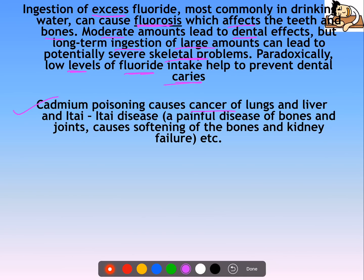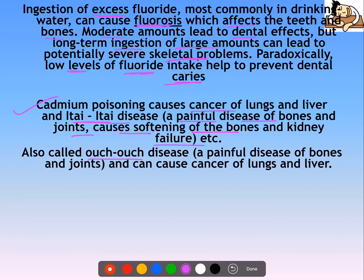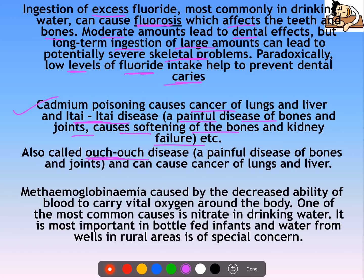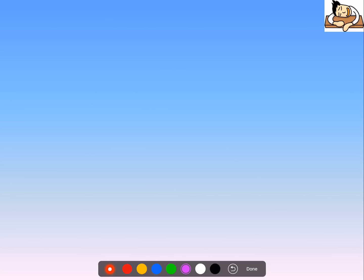Cadmium poisoning can cause cancer of the lungs and liver, and itai-itai disease — a painful disease of the bones and joints causing softening of bones and kidney failure. Itai-itai is also called 'ouch ouch' disease. Excess nitrates in drinking water can cause methemoglobinemia — a decreased ability of blood to carry oxygen. This is commonly known as blue baby syndrome and is especially concerning in bottle-fed infants and those drinking well water in rural areas.